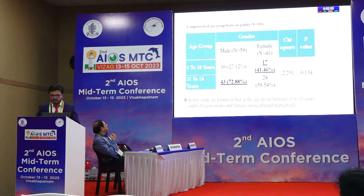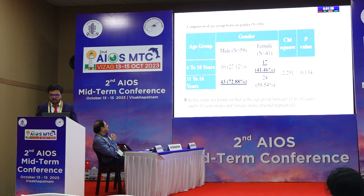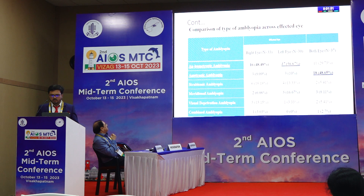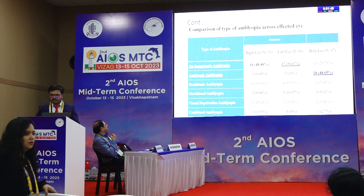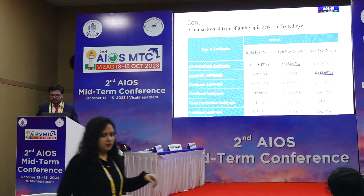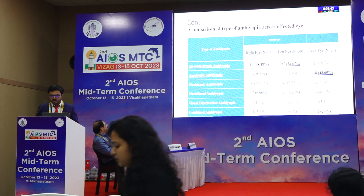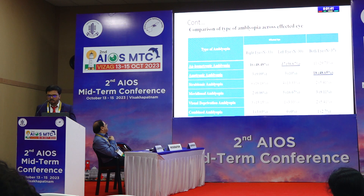Regarding age group and gender: between 6 to 10 years, females were more affected, and between 11 to 16 years, males were more affected. In anisometropic amblyopia, right eye and left eye are equally affected. In ametropic amblyopia, both eyes are equally affected.